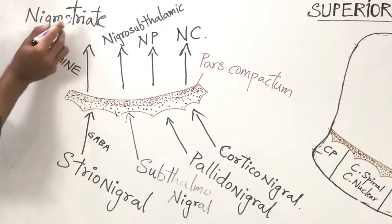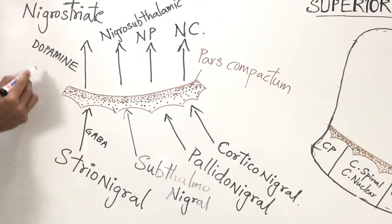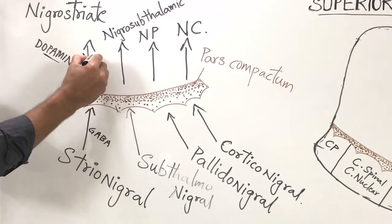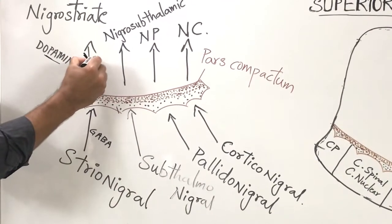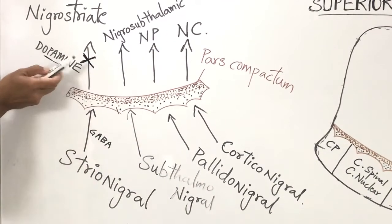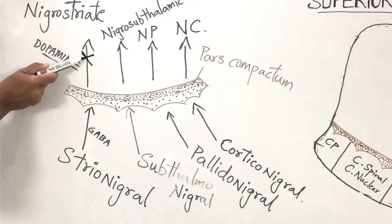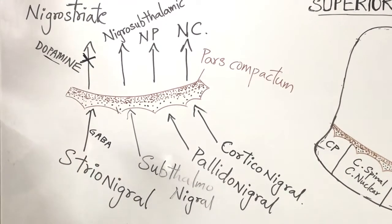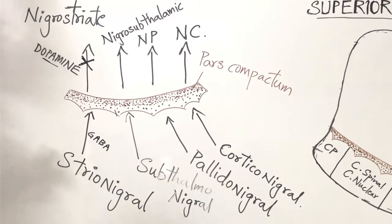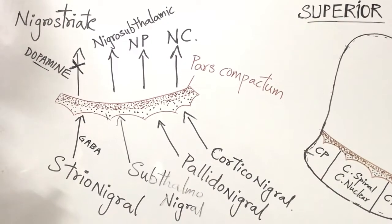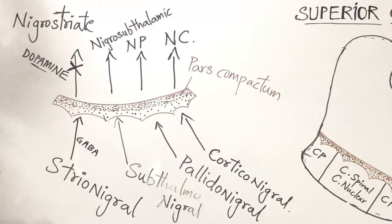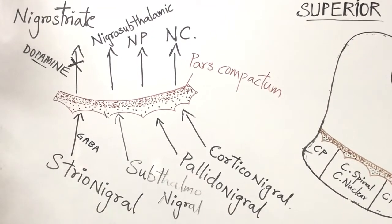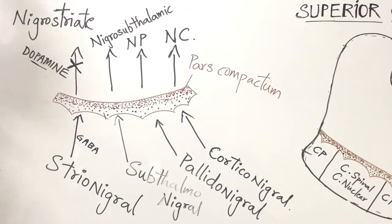Any injury to the nigrostriate fiber will lead to a decreased amount of dopamine in the midbrain, and a decreased dopamine level can cause symptoms of Parkinson's disease.